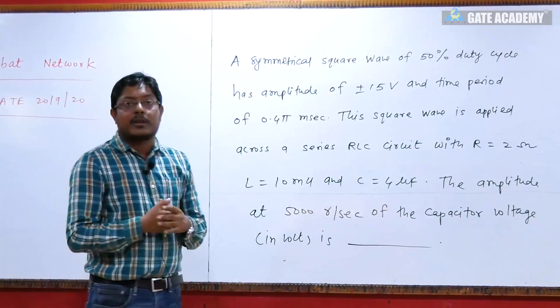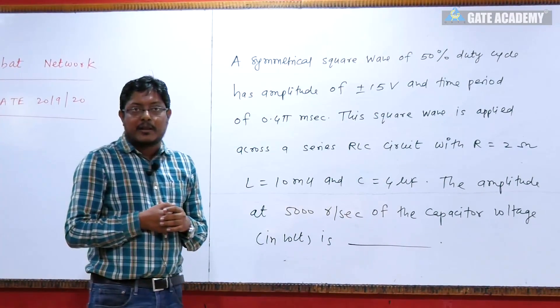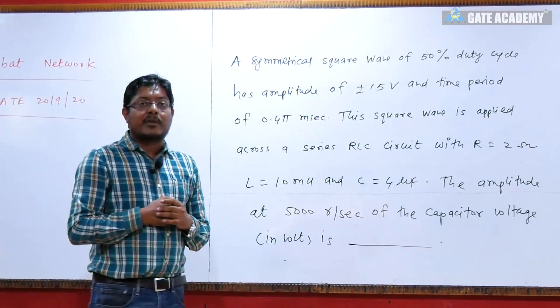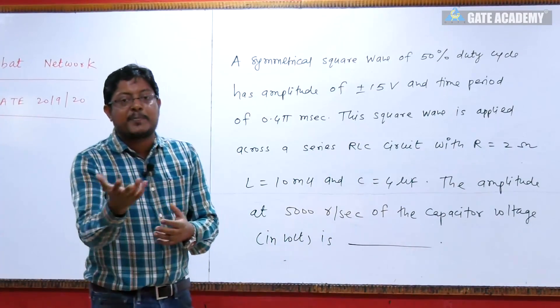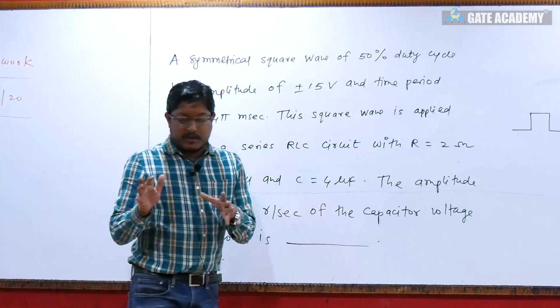Which frequency will have a magnitude? Which will be a bipolar square waveform? Which will apply your magnitude? Which will be a magnitude at 5000 radian per second?